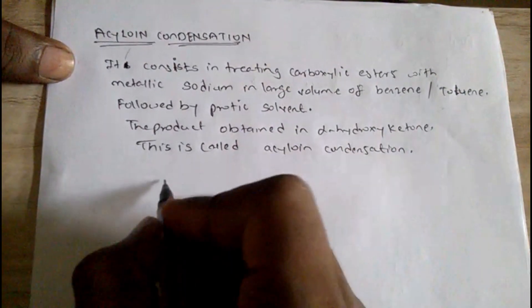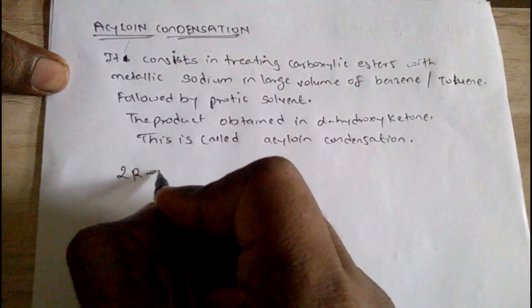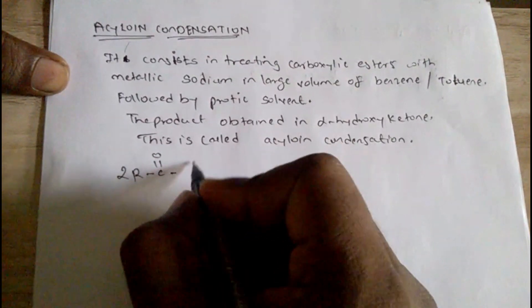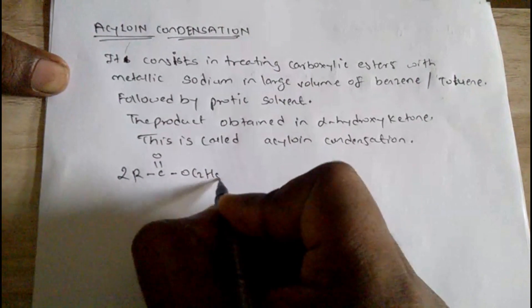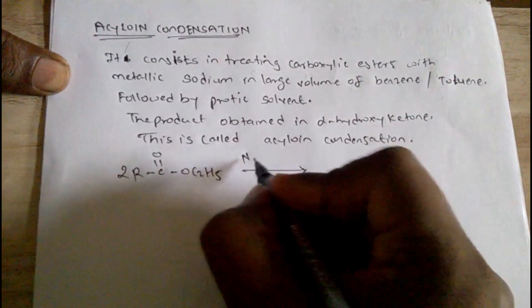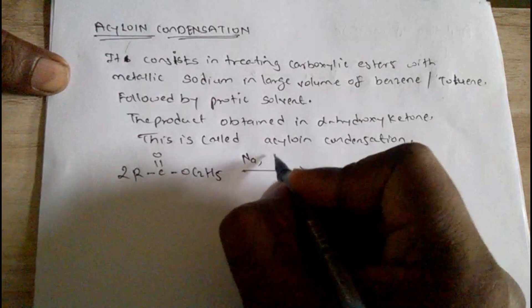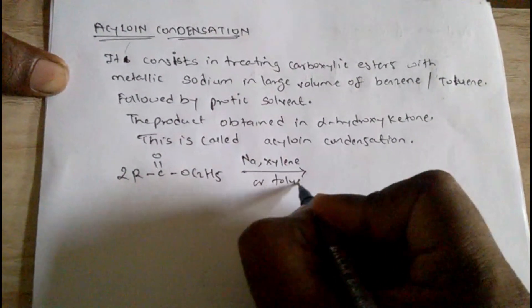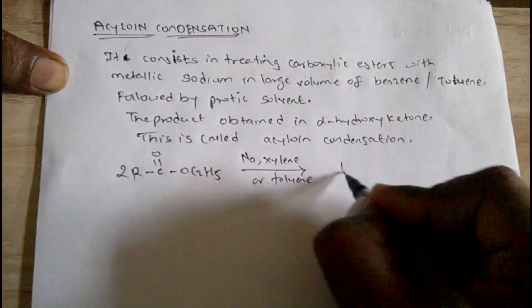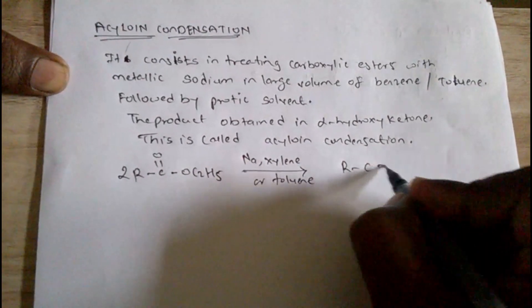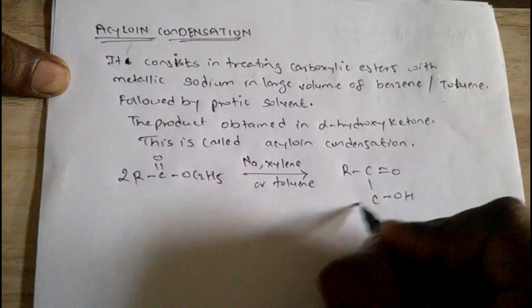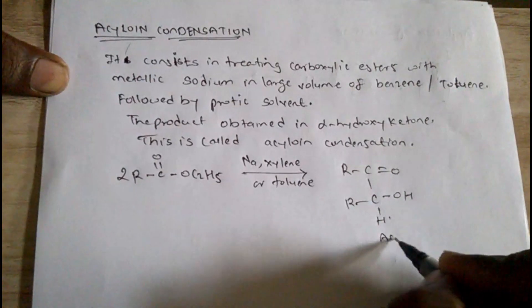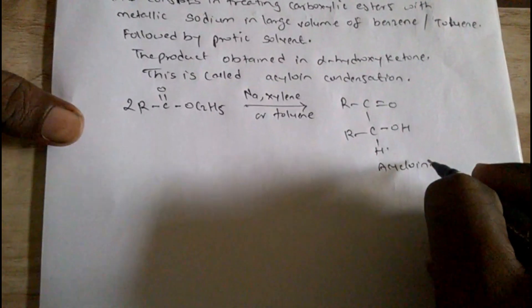In this reaction, 2 moles of carboxylic ester in the presence of sodium in xylene or toluene solvent, we get a product R-C(=O)-C(OH)(R)-H. This is an acyloin. Now we are going to see the mechanism.